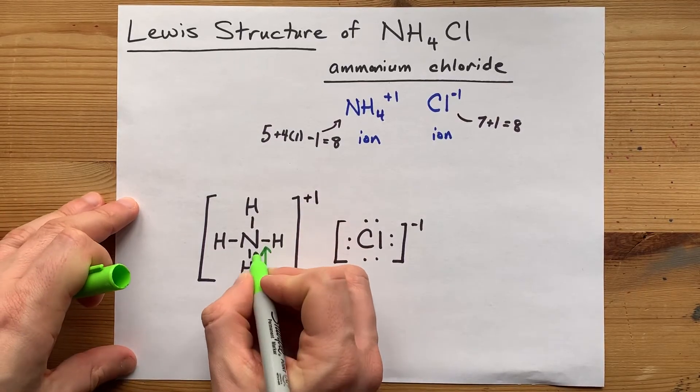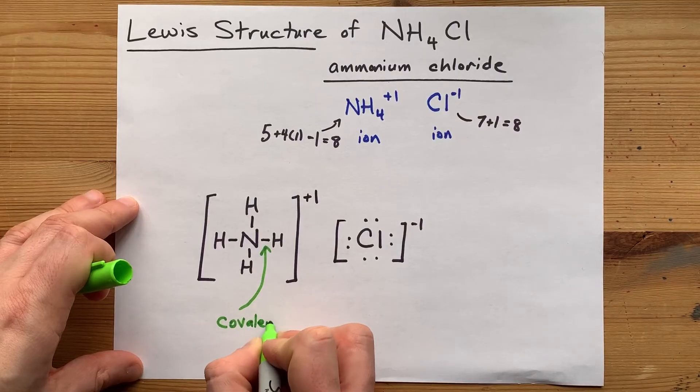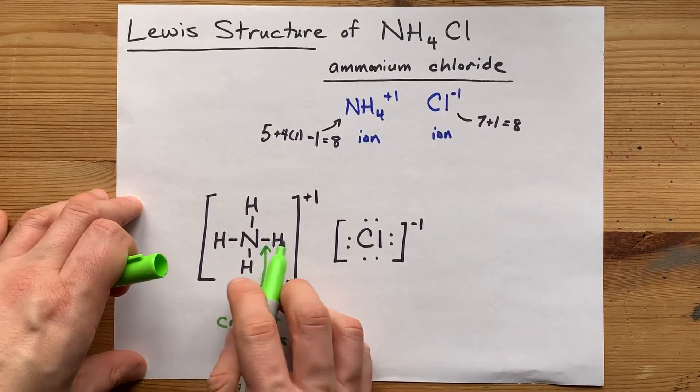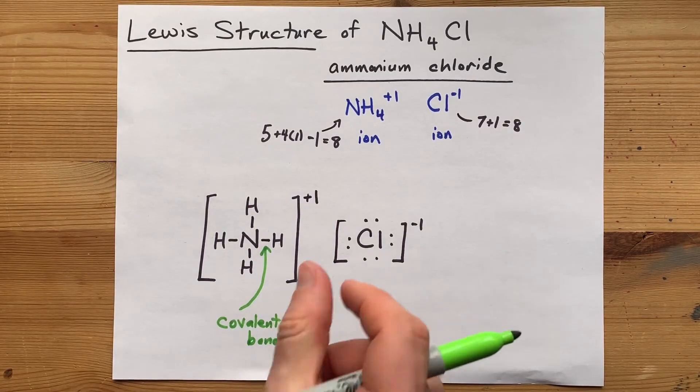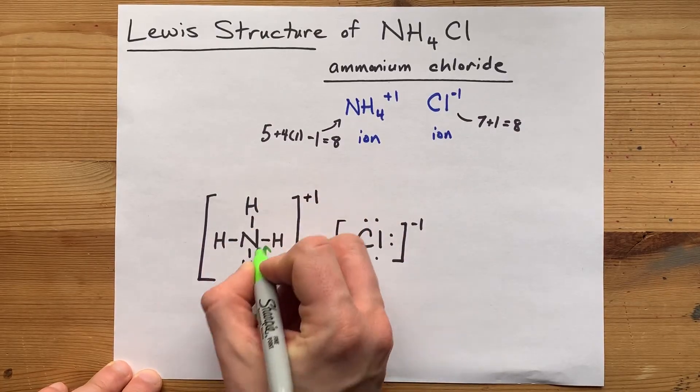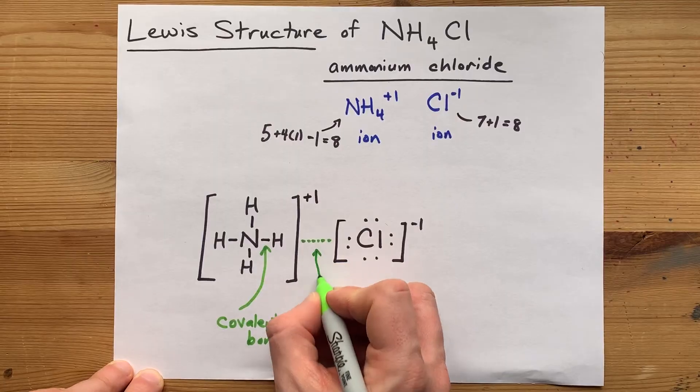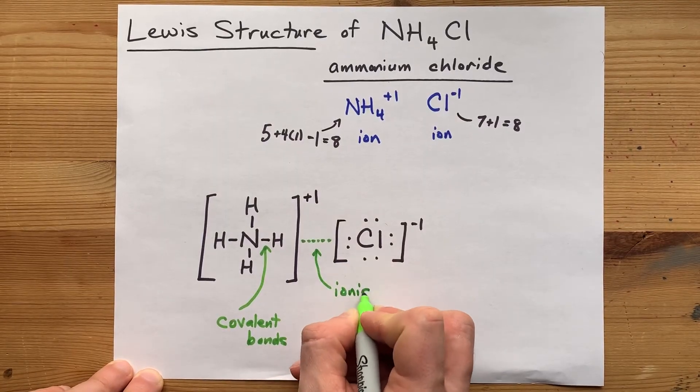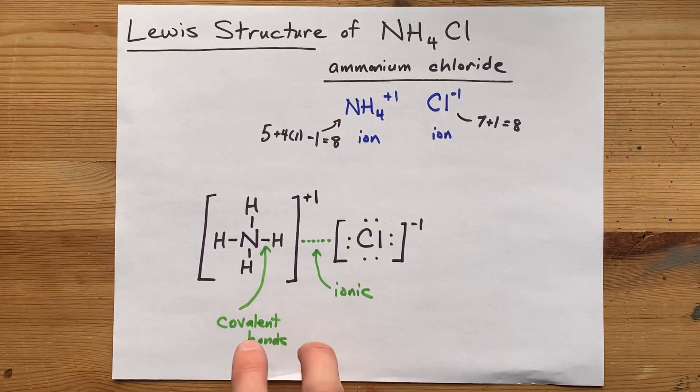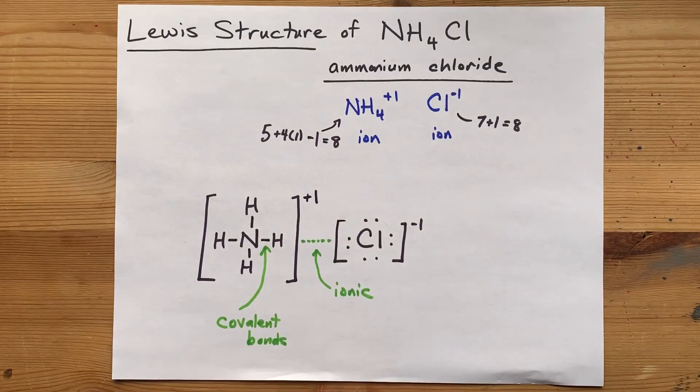These here, between nitrogen and each of the hydrogens, are covalent bonds. These occur by a sharing of electrons. The electrostatic attraction that holds the plus charged ammonium to the negatively charged chlorine happens to be an ionic bond. So, this is the rare Lewis structure that includes both covalent and ionic bonds. That's why I said it was a challenge at the beginning.